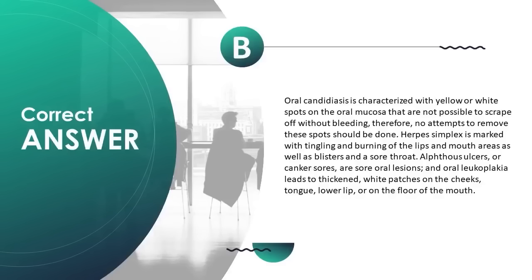Herpes simplex is marked with tingling and burning of the lips and mouth as well as blisters and sore throat. Aphthous ulcers, or canker sores, are oral lesions. Oral leukoplakia leads to thickened, white patches on the cheeks, tongue, lower lip, or floor of the mouth.